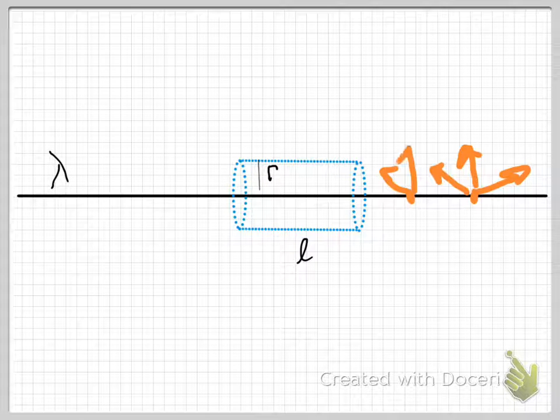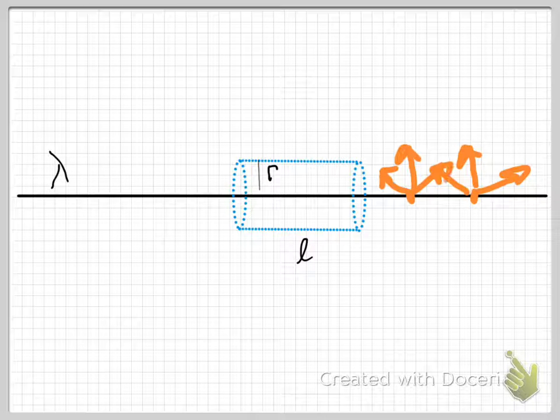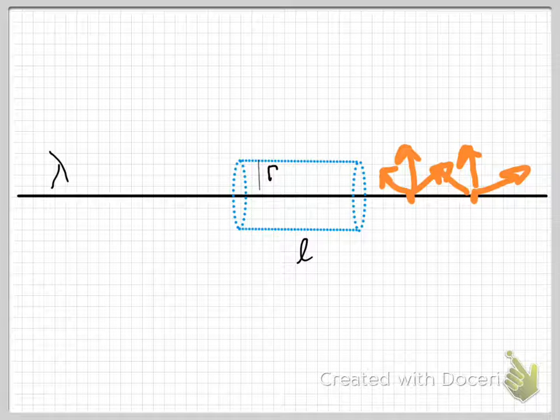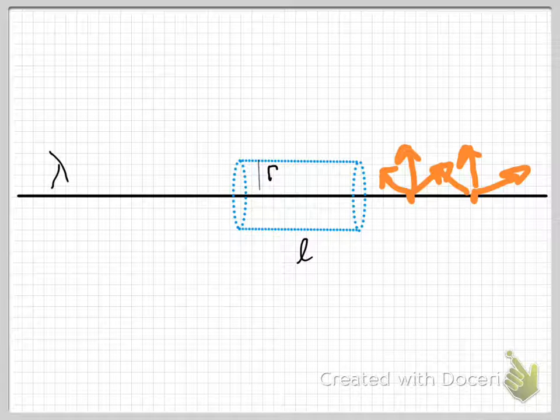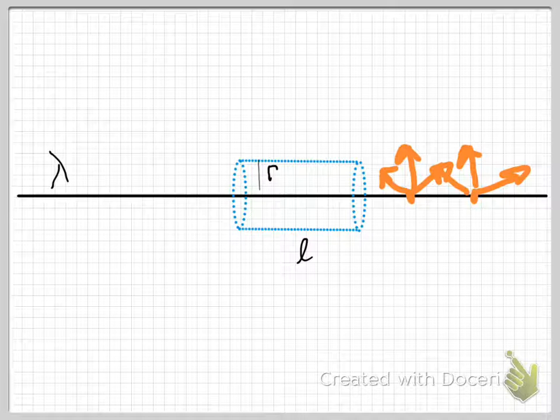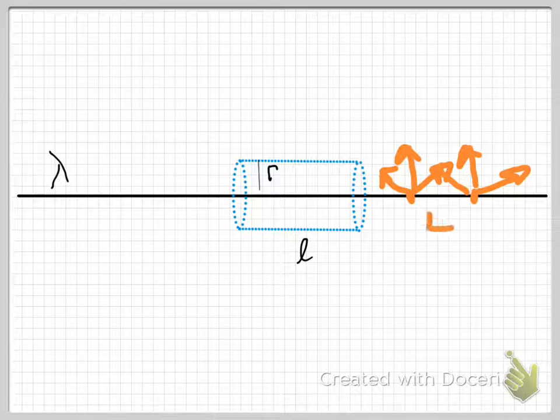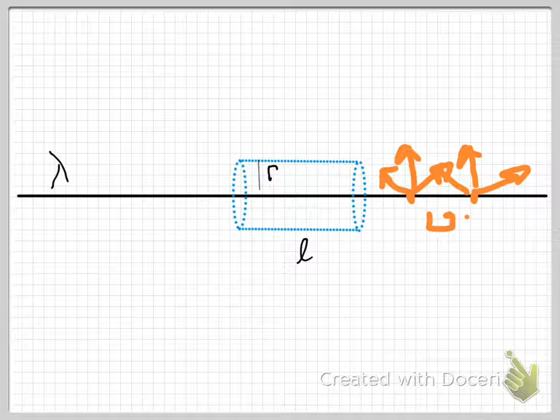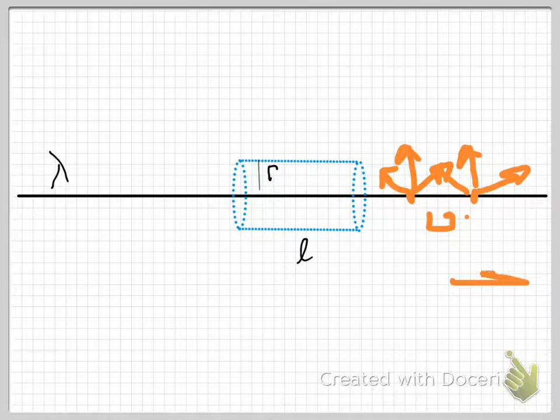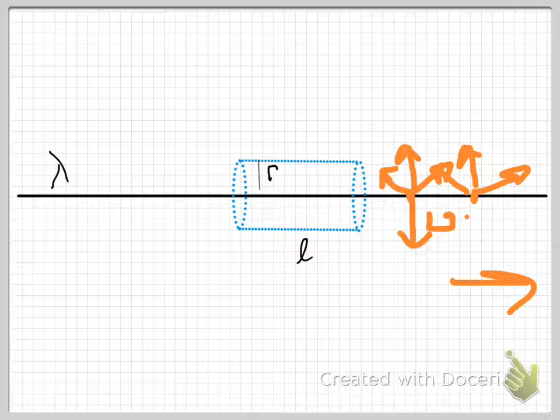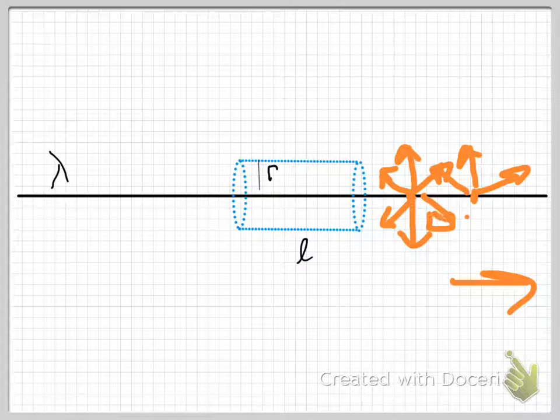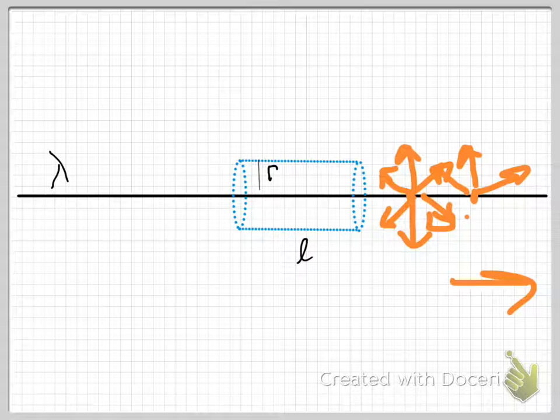Right next to that charge is another charge for which you can make the same argument. Please notice that any component of any of those field lines that is in the horizontal direction will have a partner somewhere along the line which will exactly cancel it. These two components will cancel if x is the horizontal direction. This is an infinite line of charge, so there will be cancelling pairs everywhere. All horizontal components will cancel in pairs.